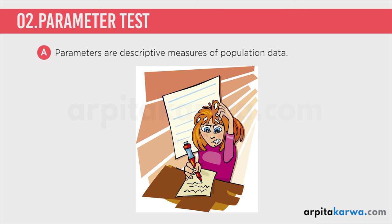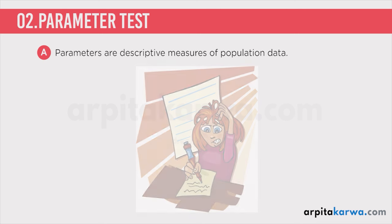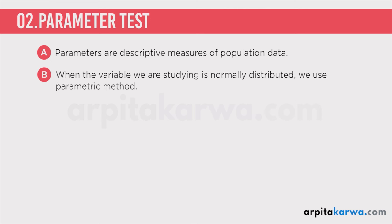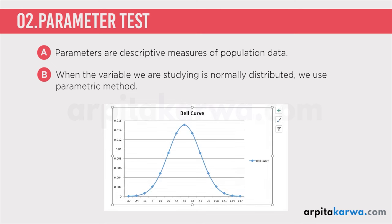Now what is a parametric test? Basically, when the variable we are studying is normally distributed, we use the parametric method. We use parametric method to test the hypothesis when the data you are getting is normally distributed. I have already discussed normal distribution in the previous video, where I talked about the correlation coefficient and how data is always reflected in the shape of a bell curve.